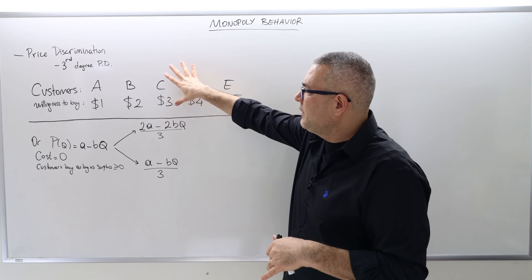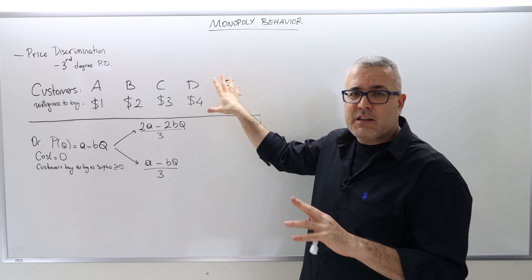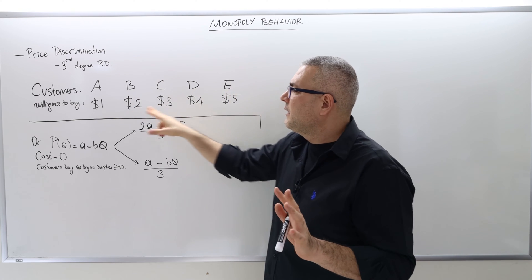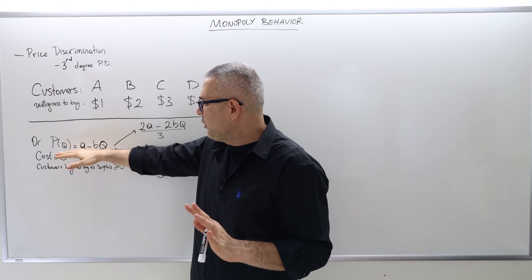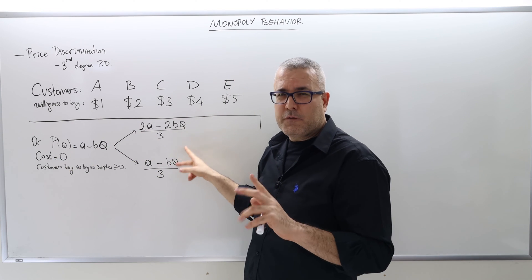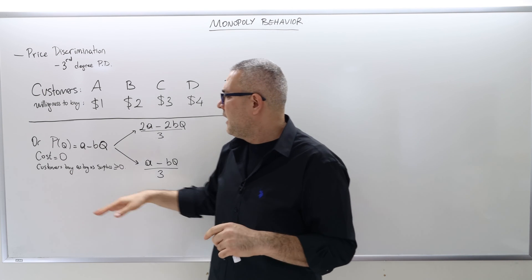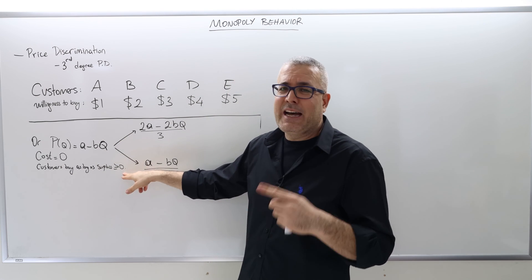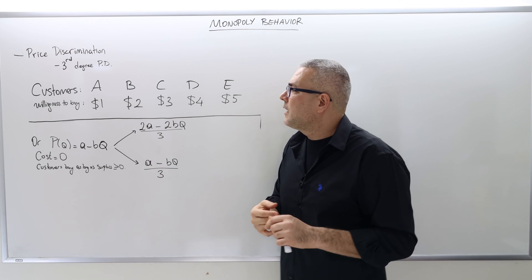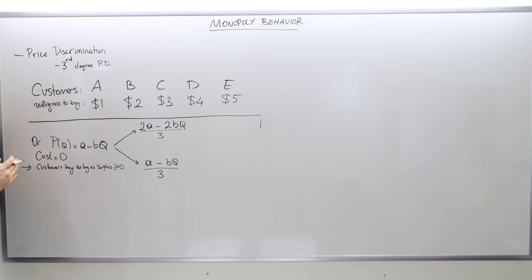I have two examples: one in which everything is discrete — the same framework with five customers and their willingness to pay — and a continuous case with a demand curve. The cost of production is zero for simplicity, and customers are going to buy as long as their surpluses are non-negative. That's the standard assumption we make in economic theory.